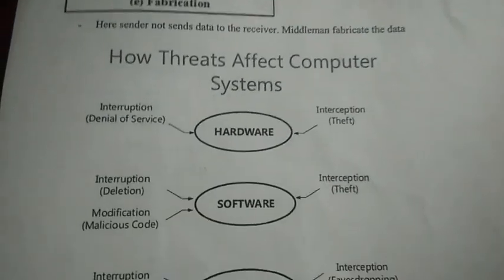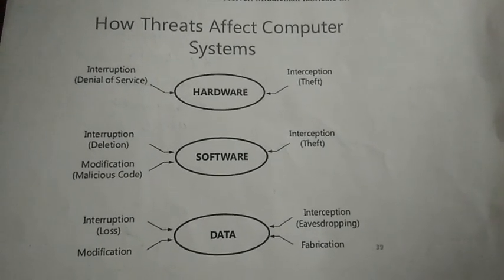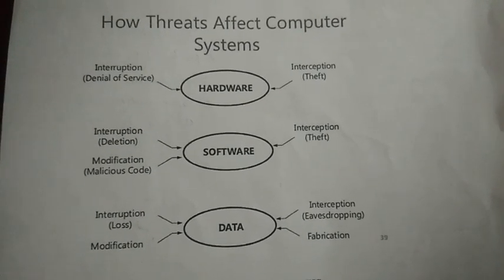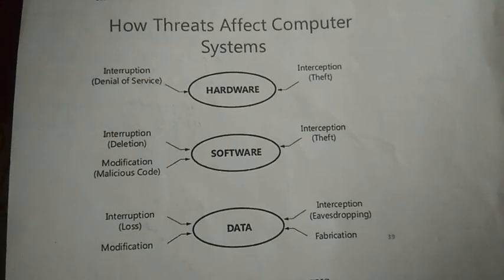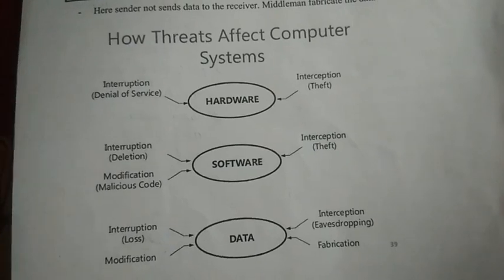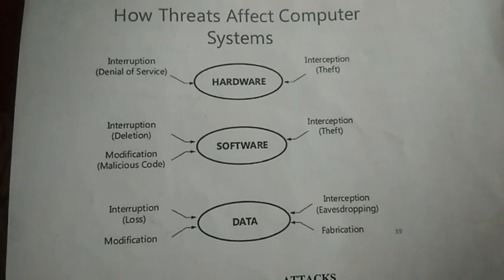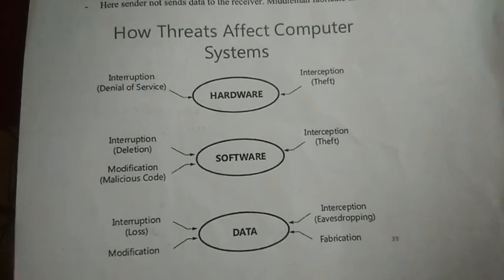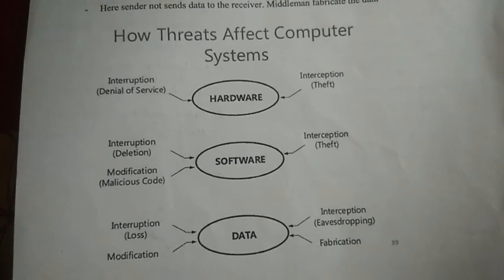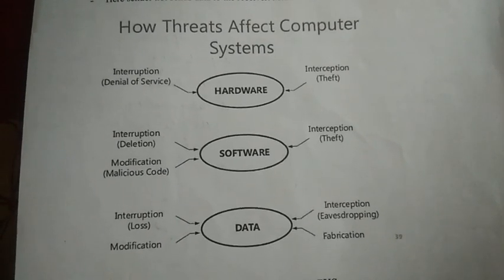How do Threats affect the computer system? A computer system has three important parts: Hardware, Software, and Data. For Hardware, Interruption means an attack on Availability — unauthorized users accessing the system — or a Denial of Service attack. Interception of hardware involves theft of the hardware.